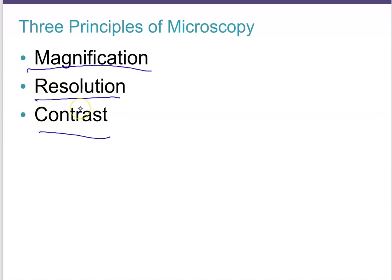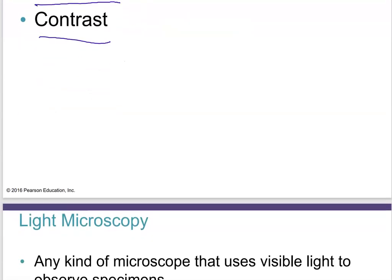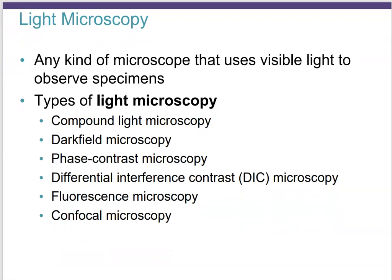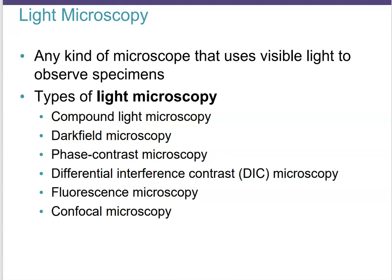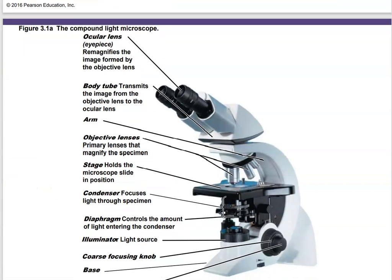The standard microscope for microbiology courses is the light microscope. We have the compound light microscope, which is what we use in the lab. We also have examples of a dark field microscope and a phase contrast microscope, but those aren't the standard. Fluorescent and confocal microscopy are really cool — they produce amazing 3D images of the interior of cells — but we don't have the capacity for those.